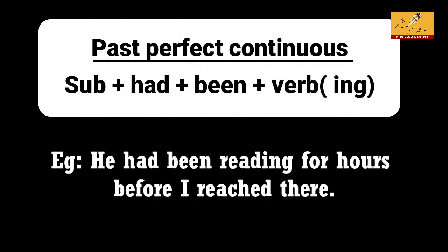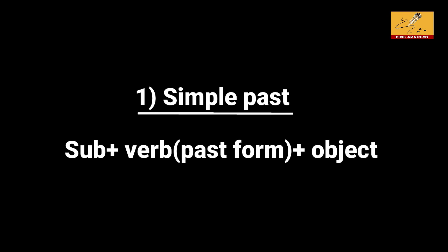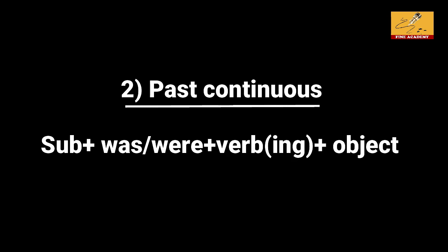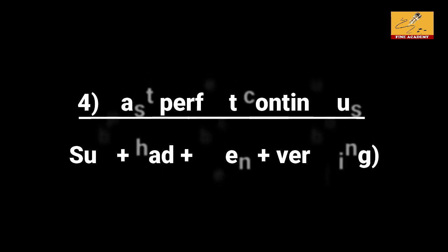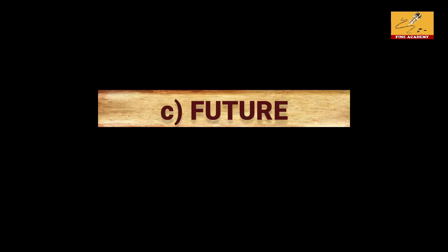To summarize, the past tense has 4 types. Simple past: subject plus past form of verb plus object. Past continuous: subject plus was/were plus verb ing form plus object. Past perfect: subject plus had plus past participle verb plus object. Past perfect continuous: subject plus had been plus verb ing form plus object.